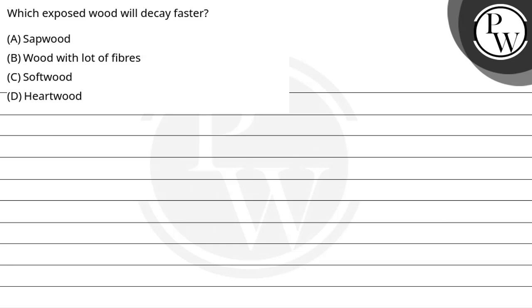Hello Bachchan, let's see this question. The question says, which exposed wood will decay faster? Options are sapwood, wood with lot of fibers, softwood, and hardwood.